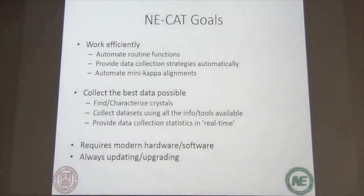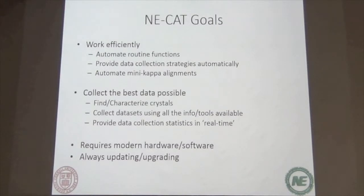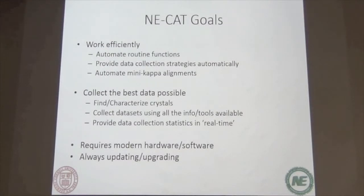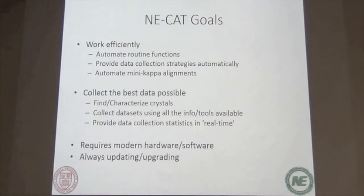So the goals of NICAT — these are our beamline goals as beamline scientists. We want you guys to work as efficiently as possible and collect the best data possible. At NICAT we try to automate as many common routines as possible, such as using the robot and the auto-mounters. There are a lot of online software tools that will automate functions that used to take a long time to set up. Through RAPID we give you automated data collection strategies.